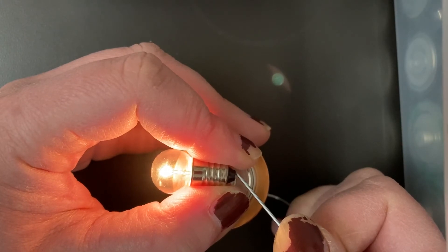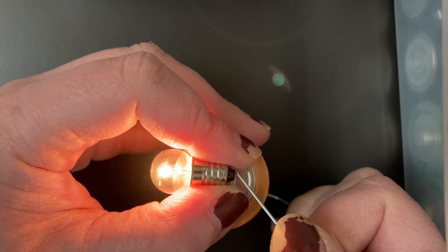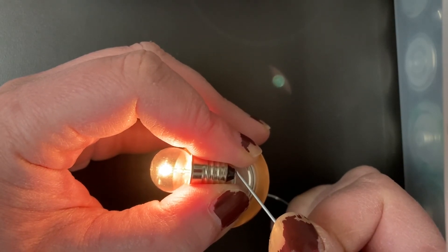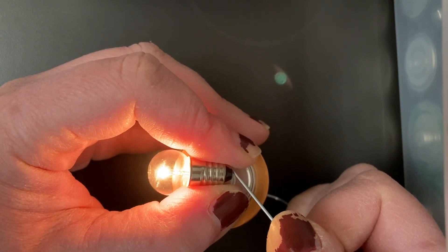So what happens is those electrons are flowing through the circuit to the positive end of the battery and when I touch this light bulb it will light up.